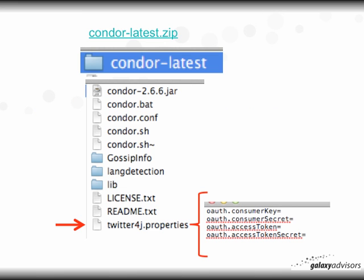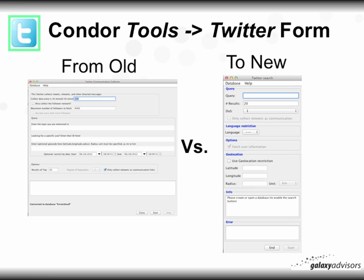Once you've downloaded and unzipped condor-latest.zip, it'll be in a folder called condor-latest with the following files and folders. You'll notice there's a file at the bottom called Twitter4j.properties. If you use a text editor to open it, you'll see it has four lines: consumer key, consumer secret, and so on — with no keys filled in. Part of this video explains how to get those keys to fill it in so that you can have the Twitter form working.